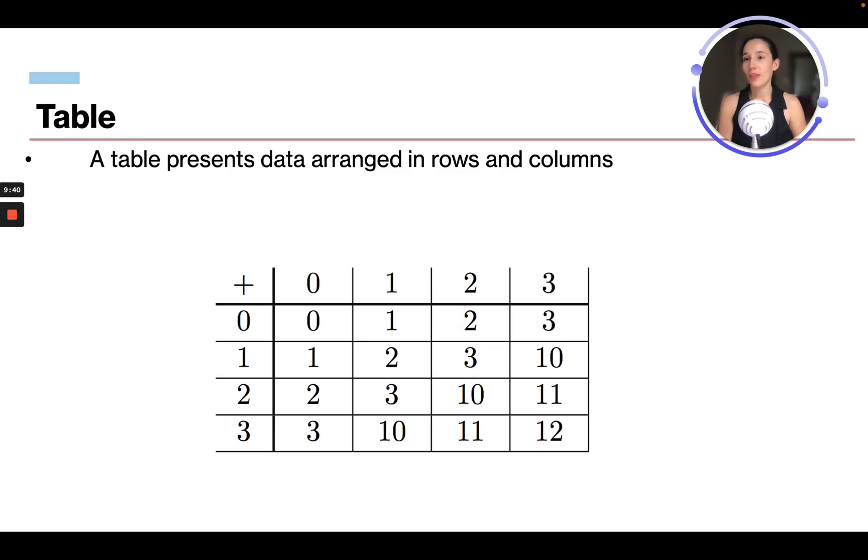So a table. A table presents data arranged in rows and columns. So here is our table. A table can have all kinds of different data, but this is just an example. You've got rows and you've got columns.